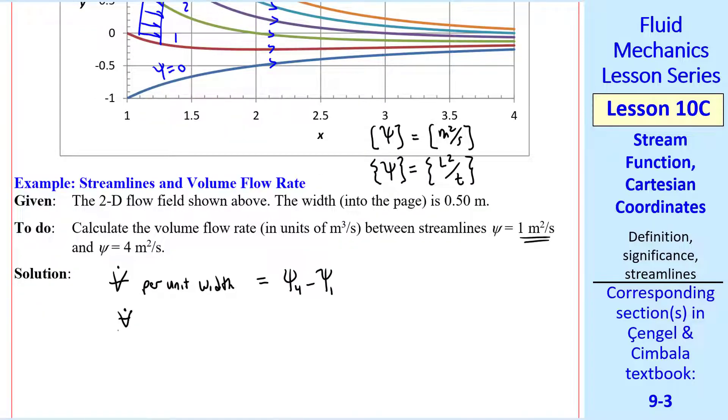So in this case V dot per unit width into the page is equal to psi 4 minus psi 1 so let's call this V dot over B where B equal the width into the page which here was given as a half a meter. So our equation for V dot is psi 4 minus psi 1 times B.